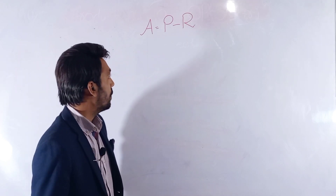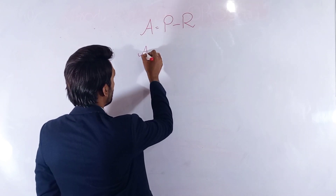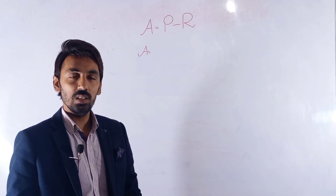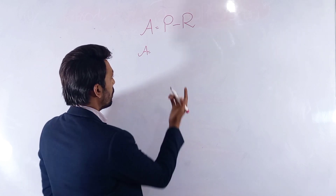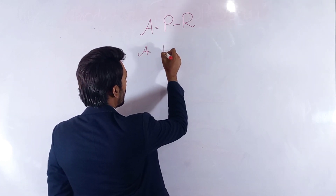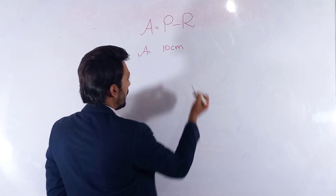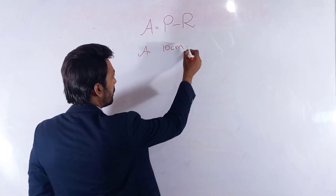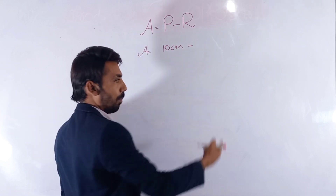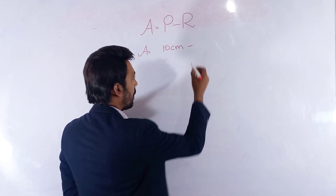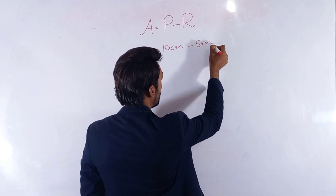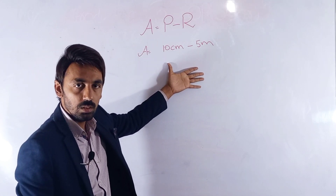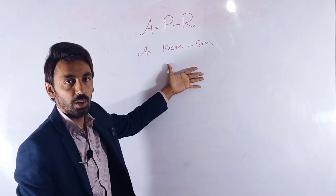Now let's suppose the near point of a person is 10 centimeters and the far point is 5 meters. These values are in distance units, not diopters, so we have to convert them into diopter form.